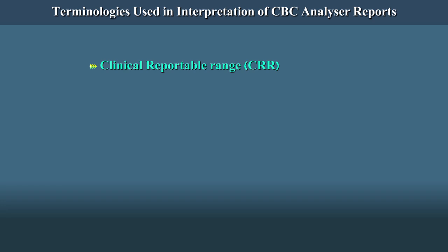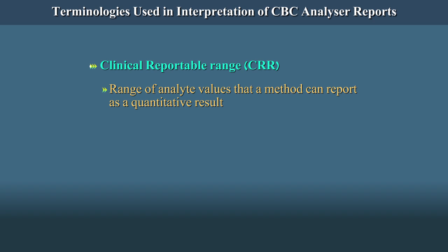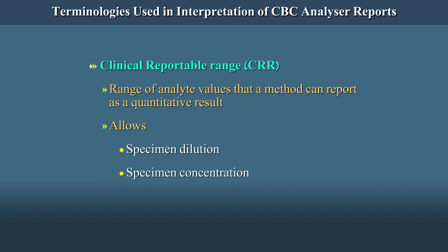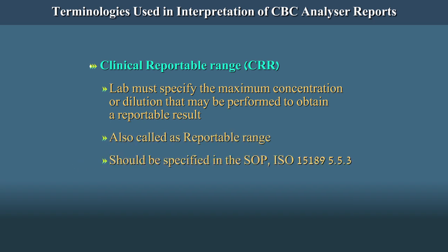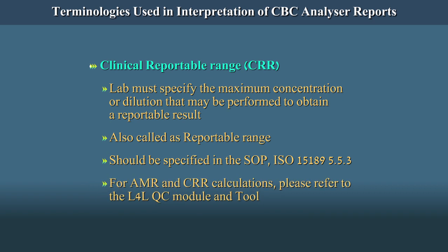Clinical Reportable Range, i.e. CRR. The CRR is the range of analyte values that a method can report as a quantitative result, allowing for specimen dilution, concentration, or other pretreatment used to extend the AMR. The lab must specify the maximum concentration or dilution that may be performed to obtain a reportable result. Also called reportable range, it should be specified in the SOP per ISO 15189 5.5.3. For AMR and CRR calculations, please refer to the L4L QC module and tool.